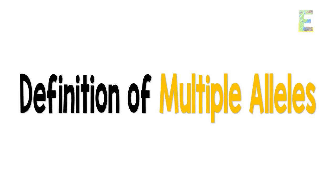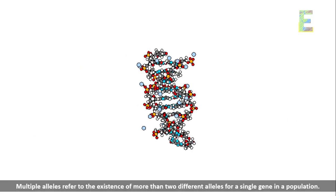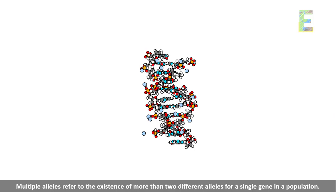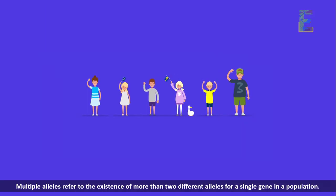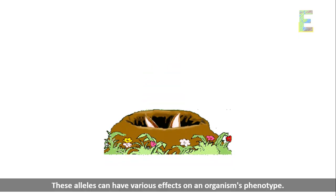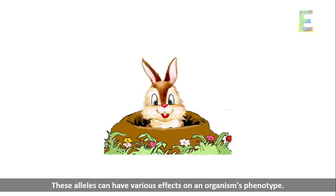Definition of multiple alleles. Multiple alleles refer to the existence of more than two different alleles for a single gene in a population. These alleles can have various effects on an organism's phenotype.